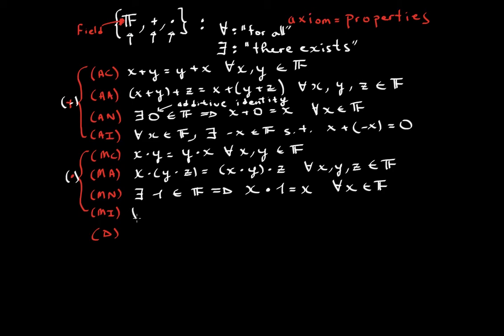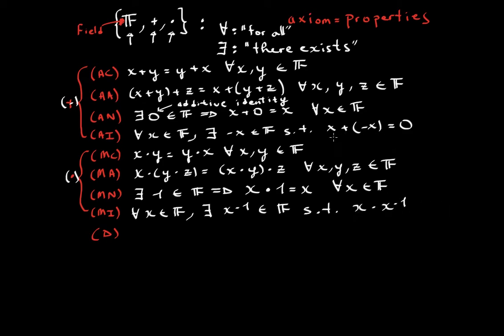For multiplicative inverse: for all x in the field, there exists an x inverse also in the field, such that x times x inverse equals one — the multiplicative identity. This is analogous to the additive inverse situation.